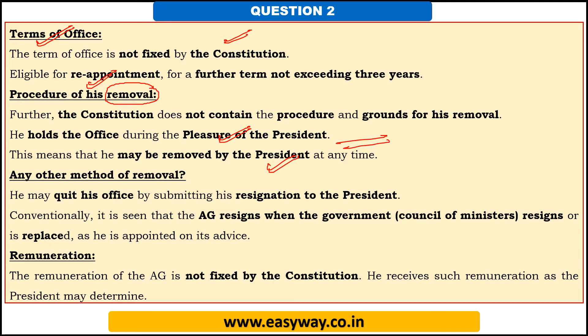The Attorney General can quit his office, but before doing so he needs to submit the resignation to the president. The convention is that the Attorney General resigns when the government resigns or is replaced, because the president appoints the Attorney General based on the advice of the council of ministers. However, this is not mentioned in the constitution. His remuneration is also not fixed by the constitution.